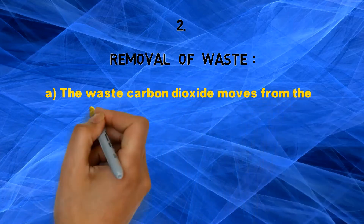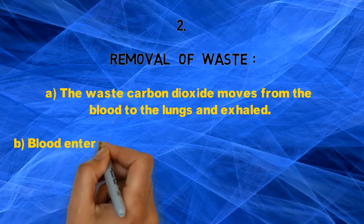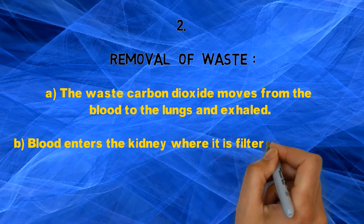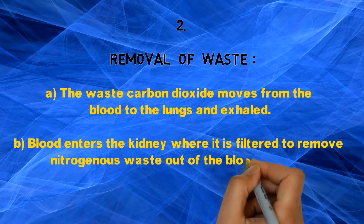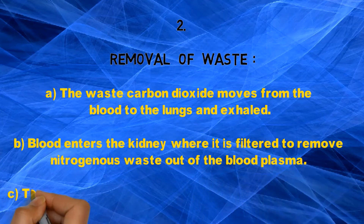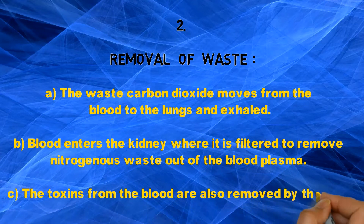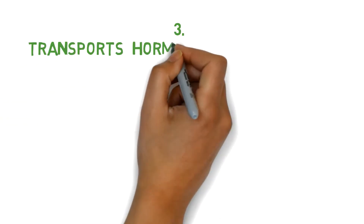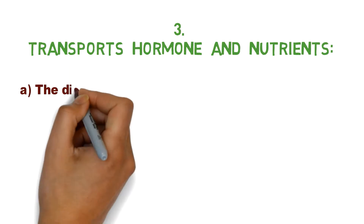Second, removal of waste. The waste carbon dioxide moves from the blood to the lungs and is exhaled. Blood enters the kidney where it is filtered to remove nitrogenous waste out of the blood plasma. The toxins from the blood are also removed by the liver.